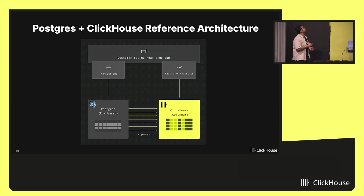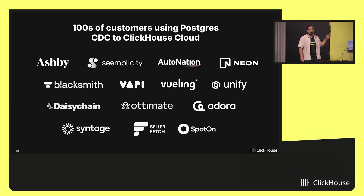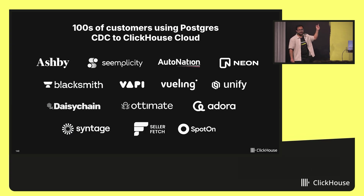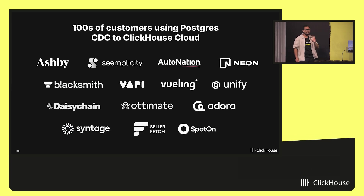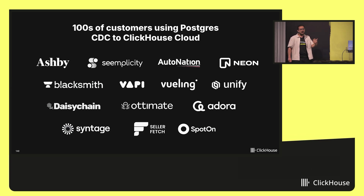This particular architecture is being followed by hundreds of customers in ClickHouse Cloud using the Postgres CDC connector. Today it went GA, and since the past six months it has been going through extensive iterations. There are hundreds of customers already using the service, and it's moving around 100 plus terabytes per month from Postgres to ClickHouse. The Postgres sources include Aurora, RDS, Google Cloud SQL, Neon, Supabase, and more.